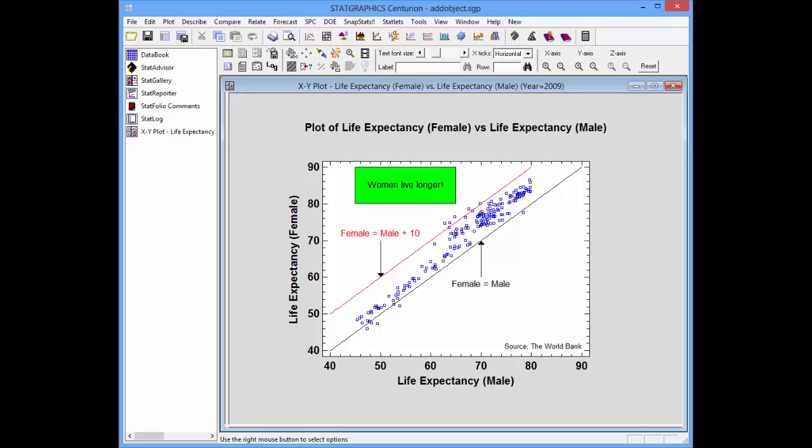The add object dialog box is an important new addition to version 17 which allows you to make your graphs much more informative.